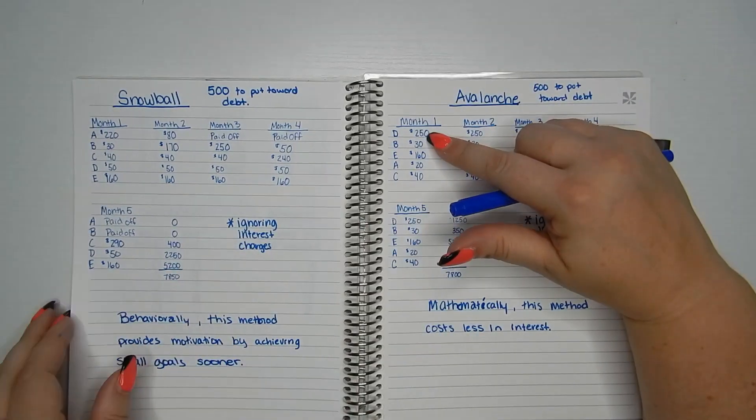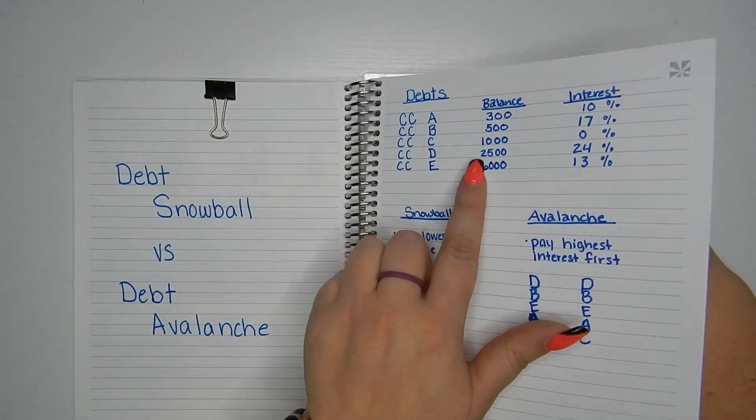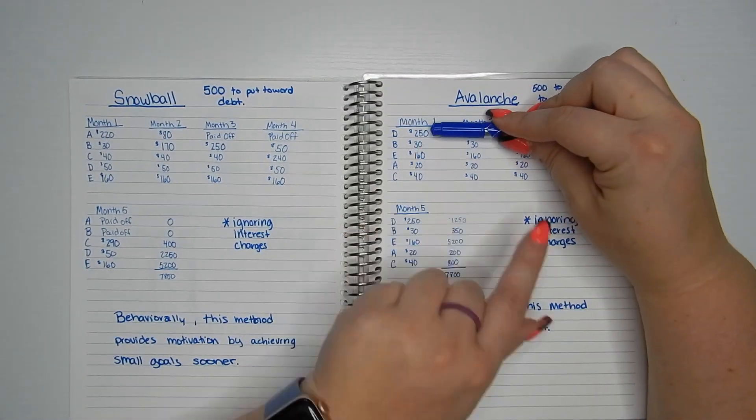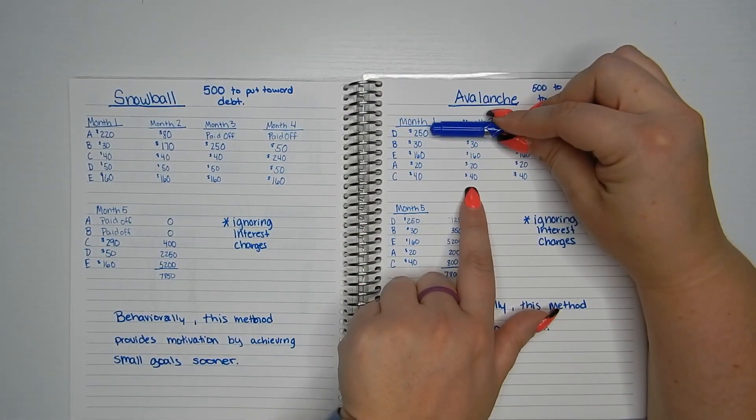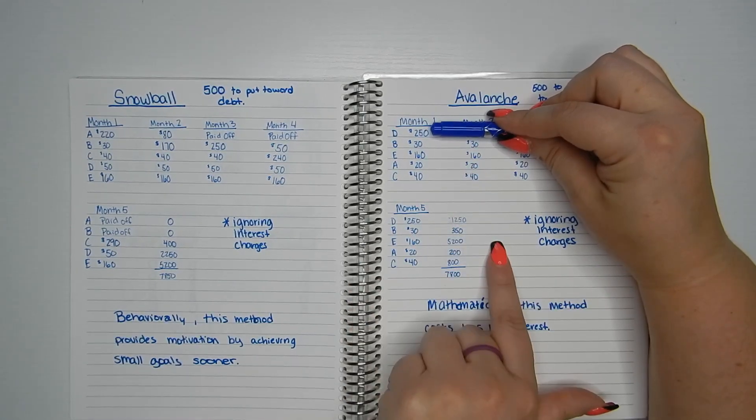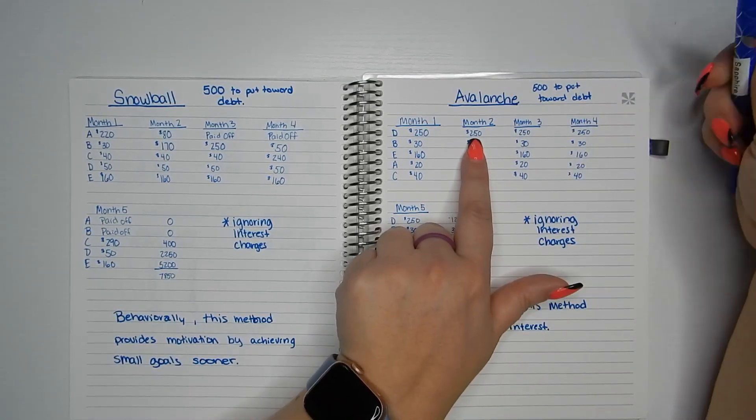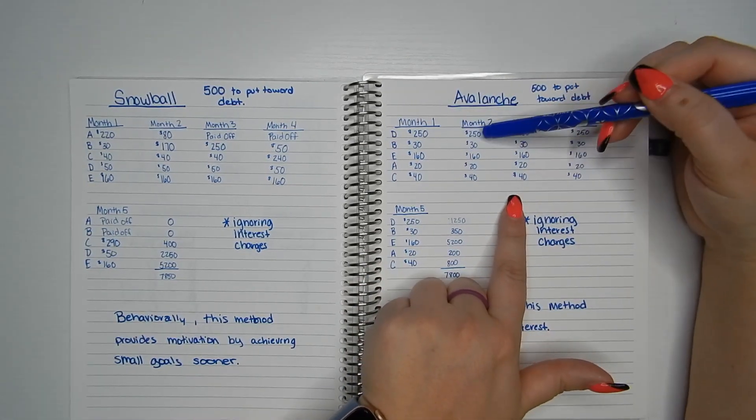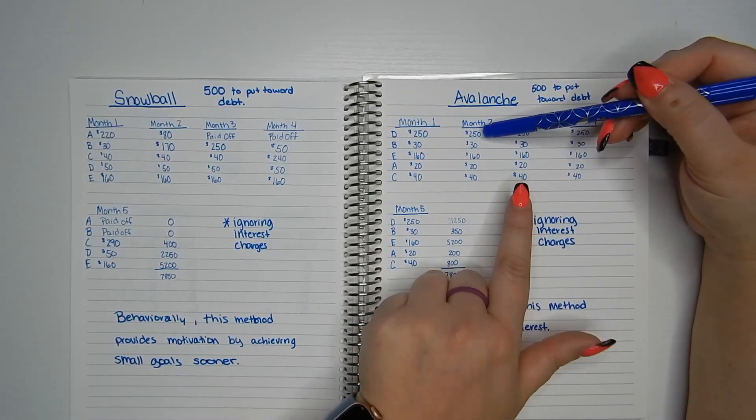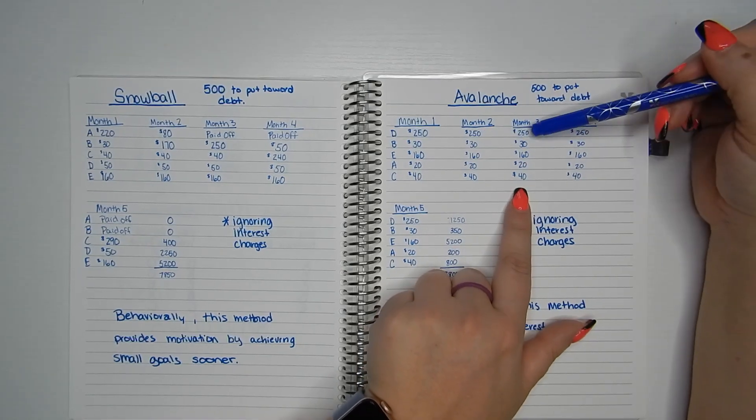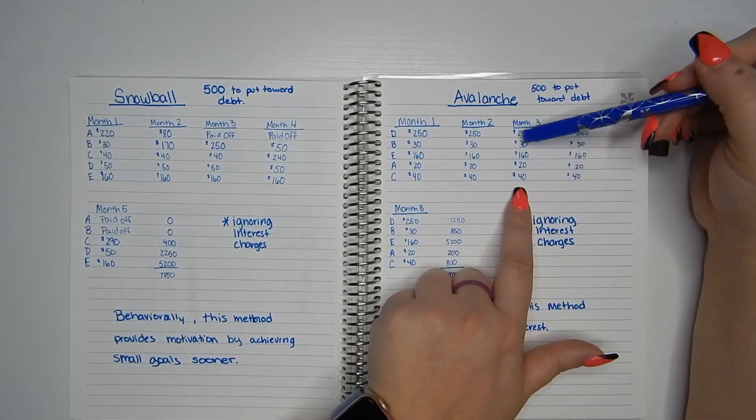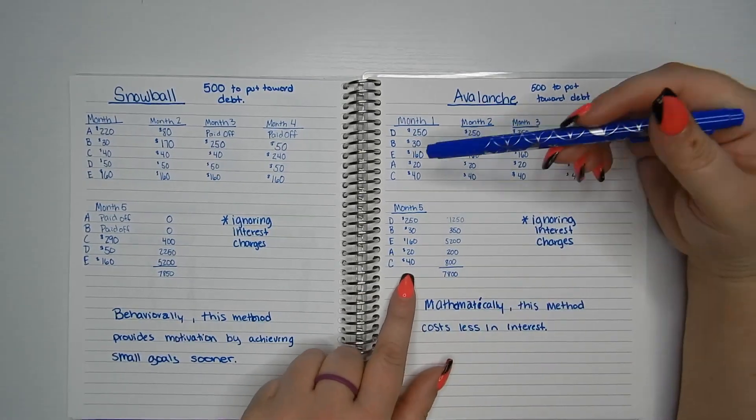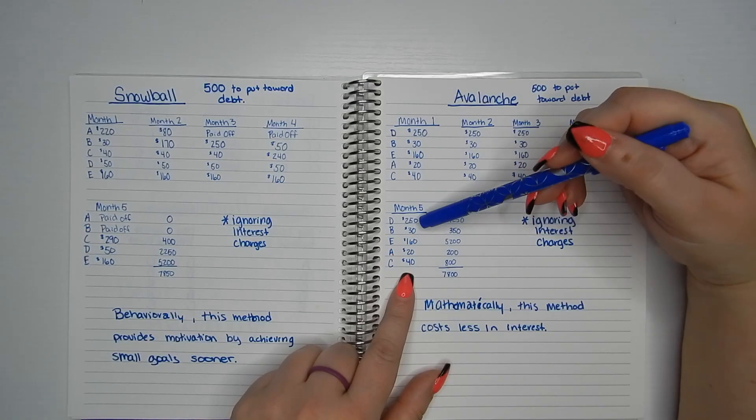And if you remember, card D had a balance of $2,500. So D is the one we're focusing on. Next month, we're still doing our minimum toward these four and we still have $250 to put towards card D. So we've paid off $500 of our $2,500, but it's still there. So month three, more of the same. Month four, more of the same. Month five, more of the same.